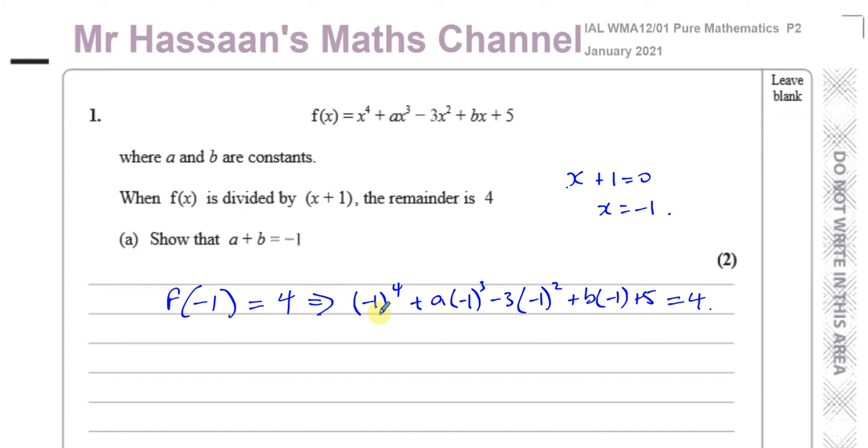Remember, when you raise a negative number to an even power, it becomes positive. So (-1)^4 is going to be positive 1. And a times (-1)^3, well that's -1 to an odd power, like -1 × -1 × -1, which is going to be negative, so it'll be -a.